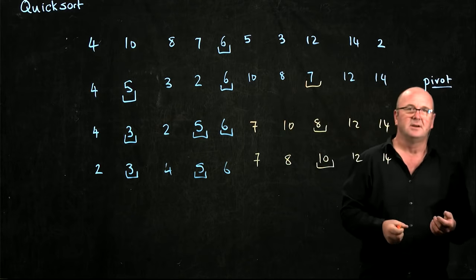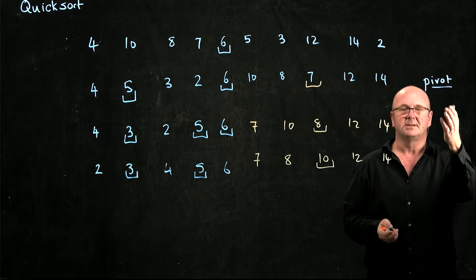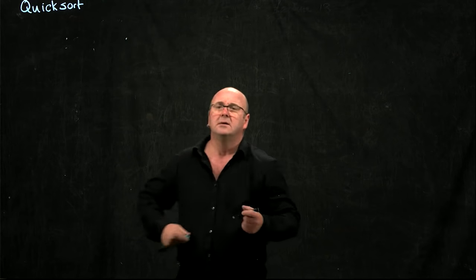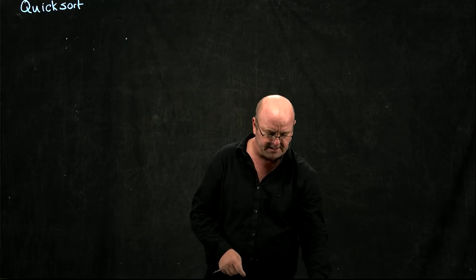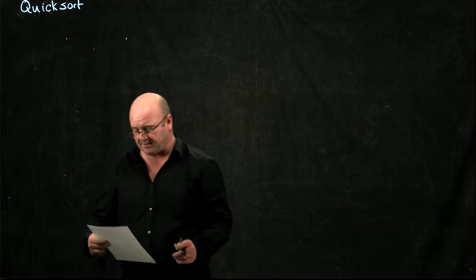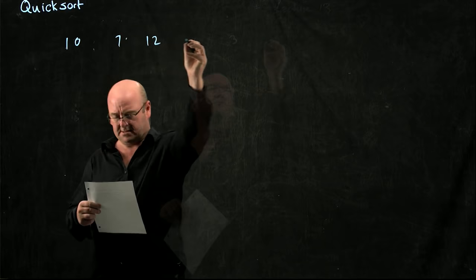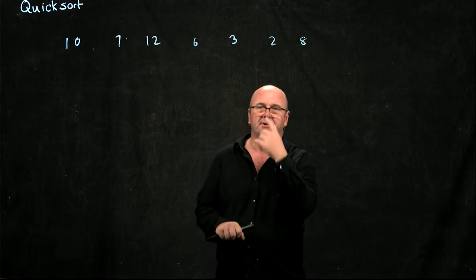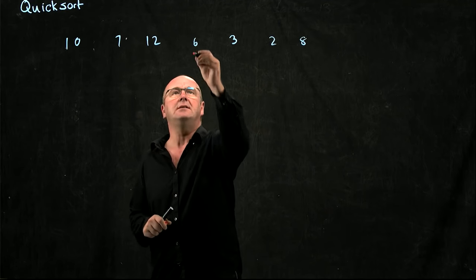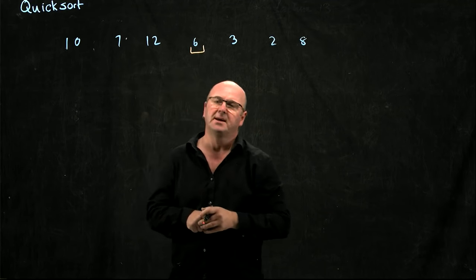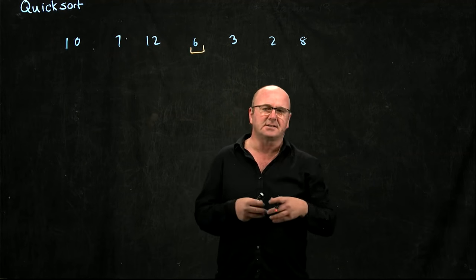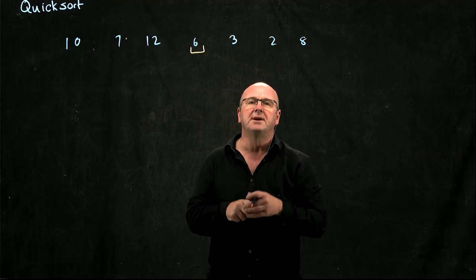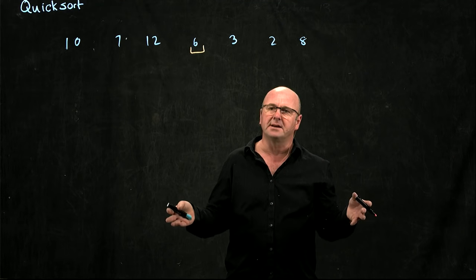So the idea with quicksort is that we choose a pivot point, we move the smaller things to the left and the larger things to the right. How do we choose the pivot point? Here's another list of numbers that we can sort. One of the ways that we can choose our pivot point is to choose the number in the middle of the list. If we have a list of numbers that are somewhat randomly sorted, presumably a number in the middle will be approximately a median value.